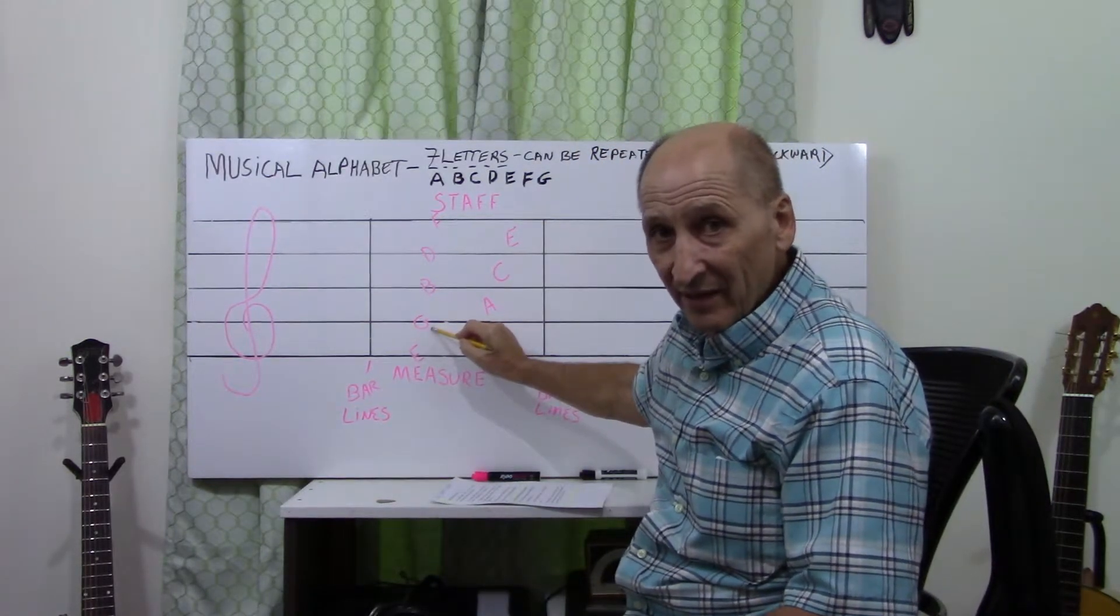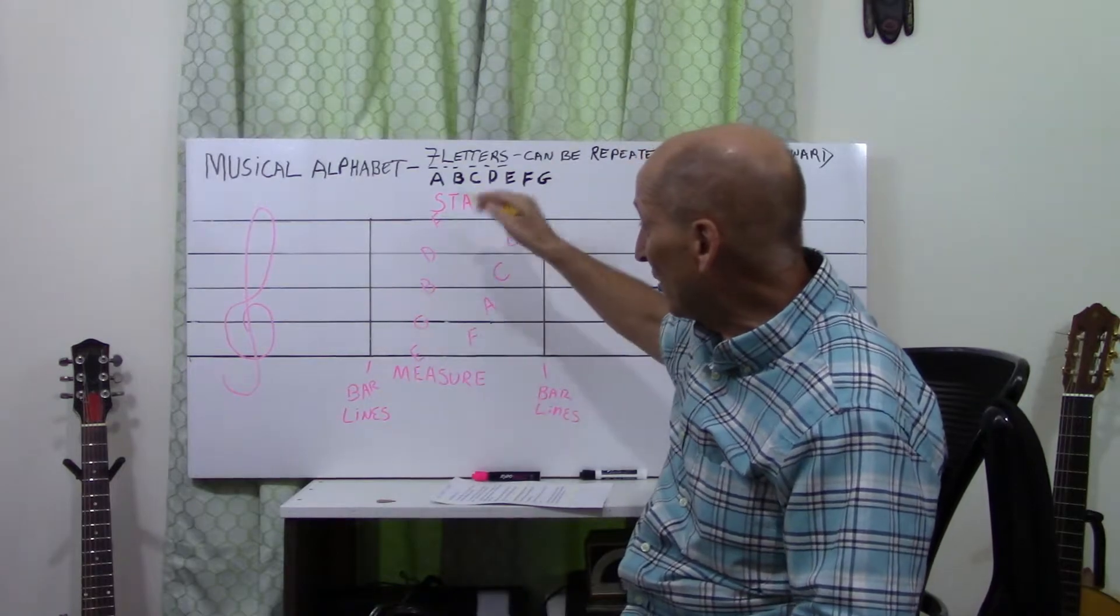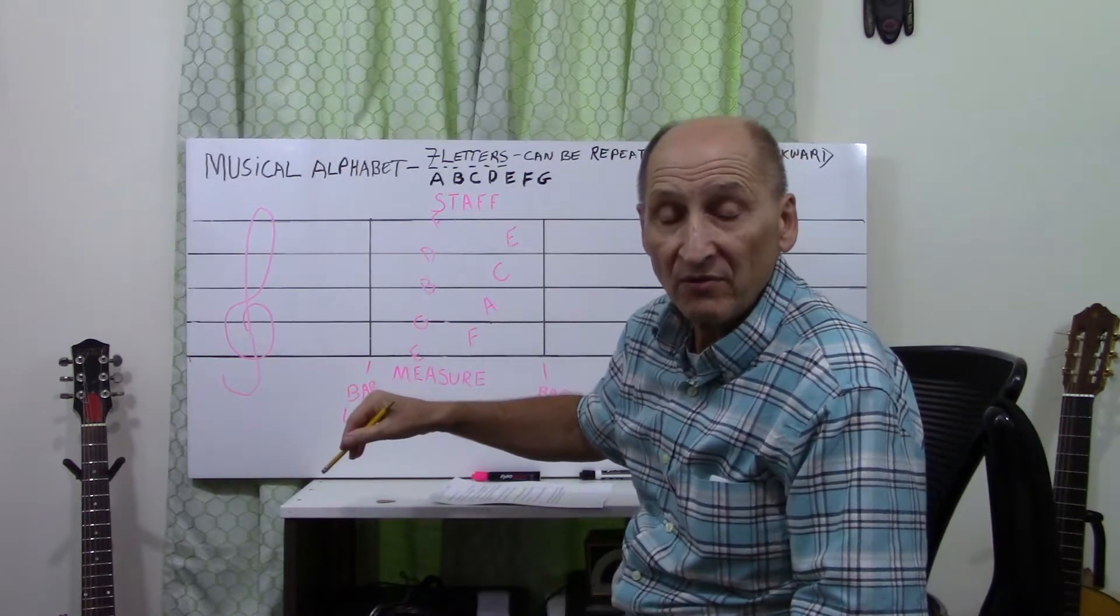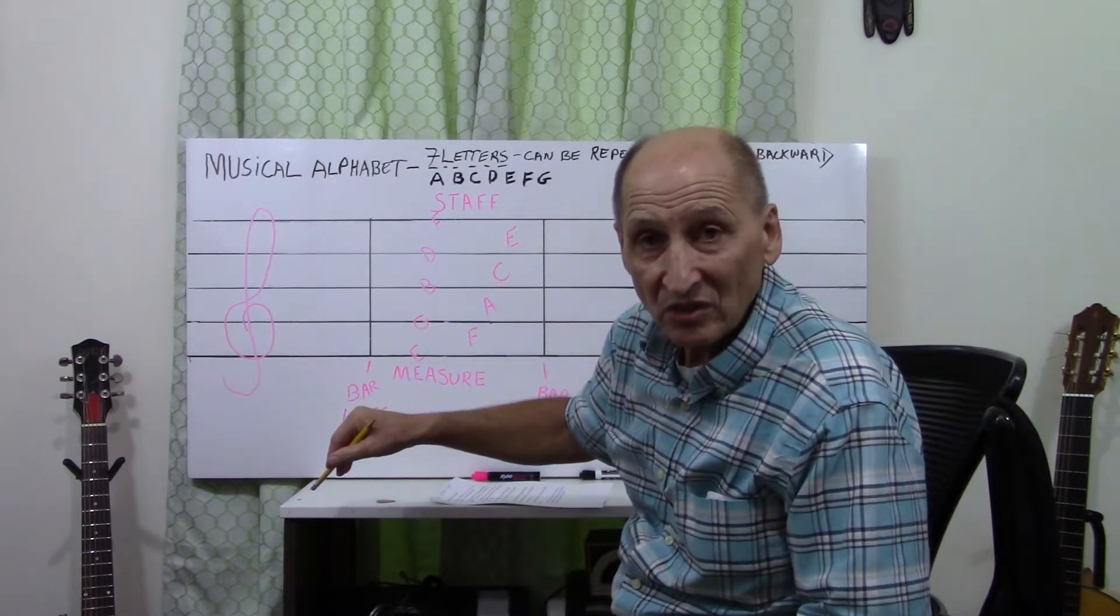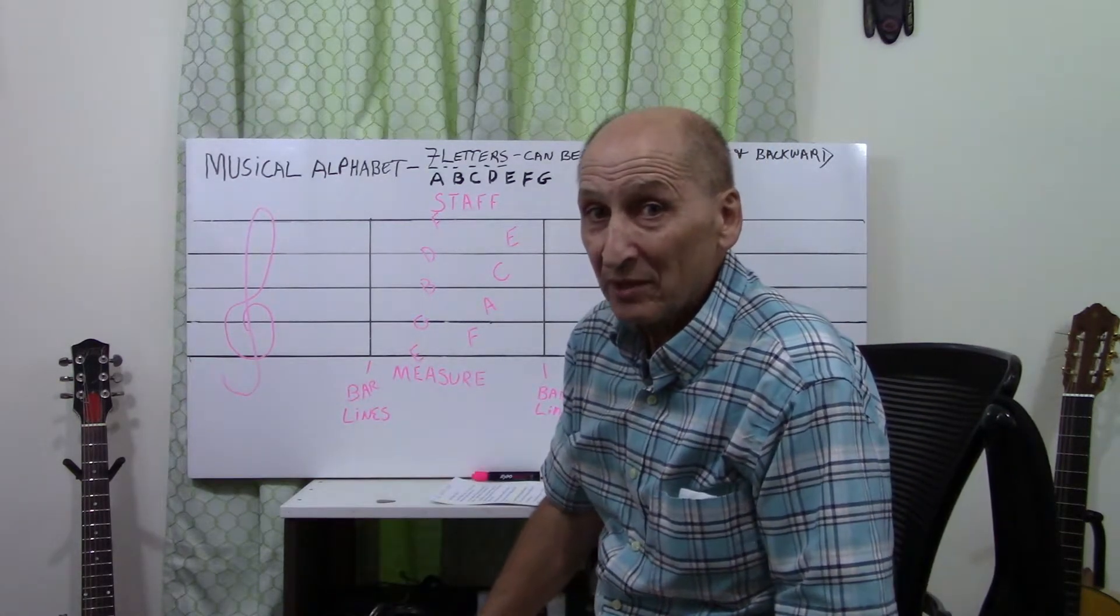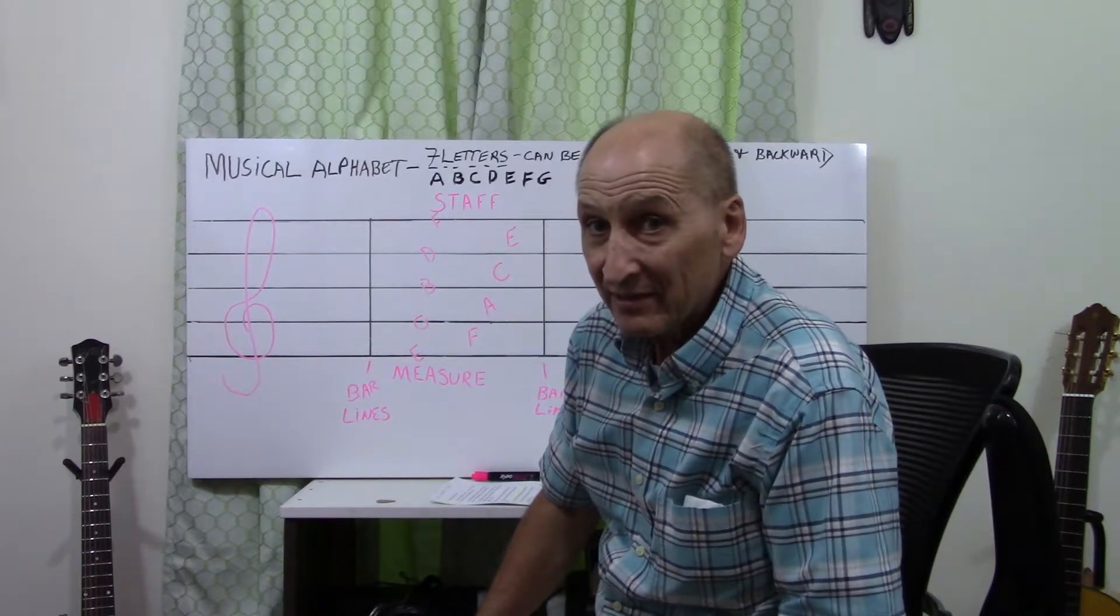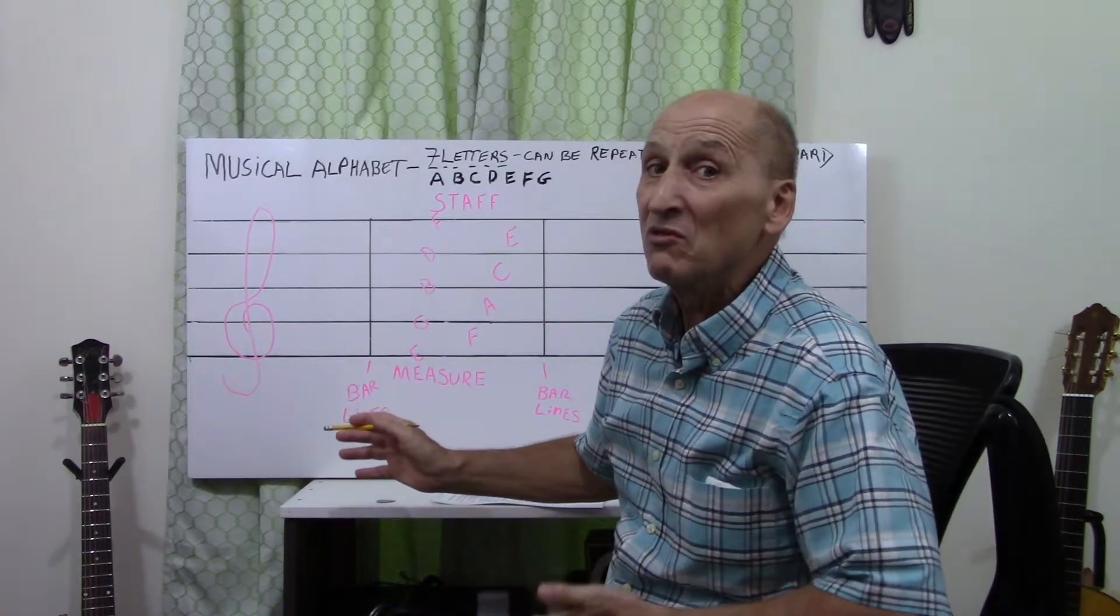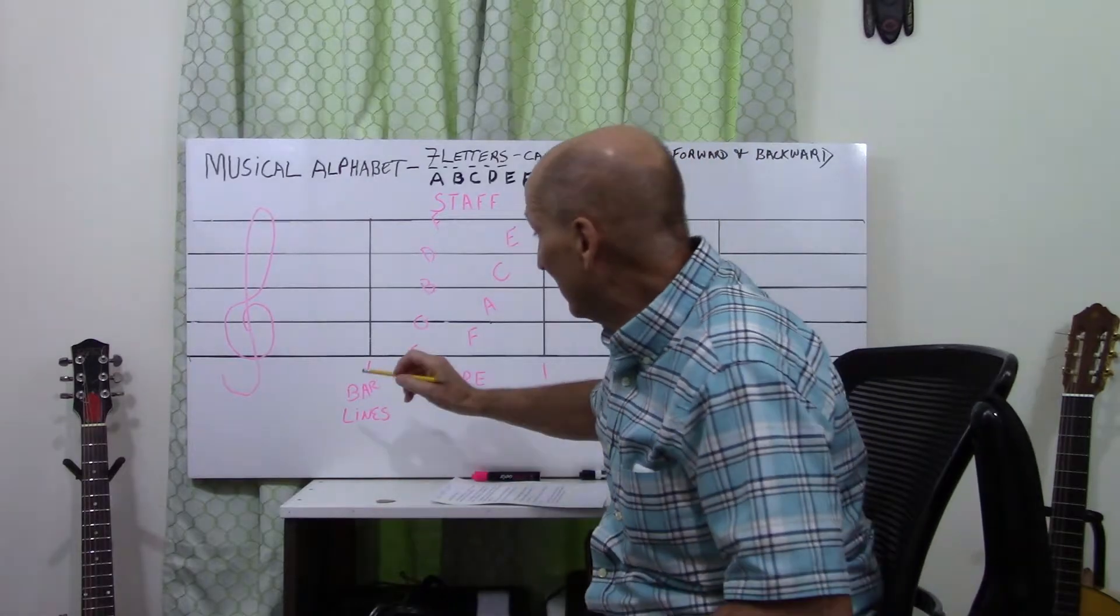Once you know that, it's easy to figure out the rest of the lines and the spaces. Remember when I was talking about alphabet, arithmetic, and this is going to be the first A, alphabet.